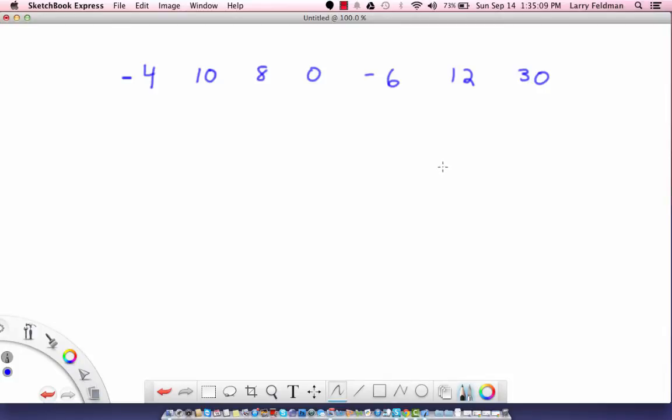In this lesson I want to talk about the five number summary that is used in statistics to describe five key characteristics of a set of data, and the best way to describe it is with a couple examples.